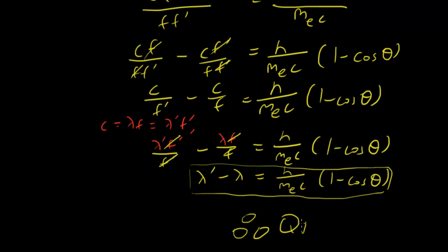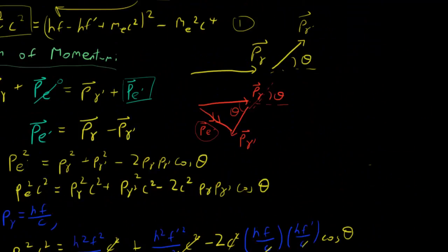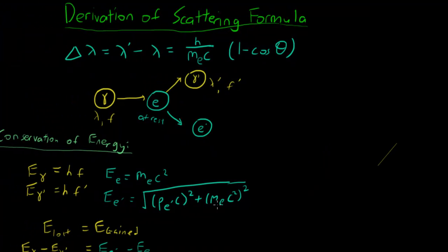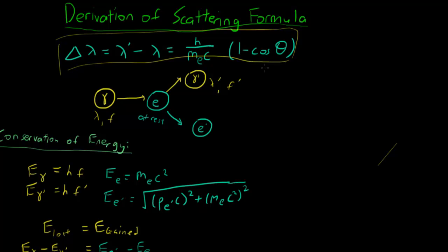Therefore, QED — we have derived the Compton scattering effect formula. Hopefully you guys understood the direction of it. When I'm trying to derive the formula I can't really talk much because I'm thinking at the same time. But hopefully you can see how Compton derived it using the laws of conservation of energy and conservation of momentum. Hope you guys enjoyed this — see you in the next episode, peace out.